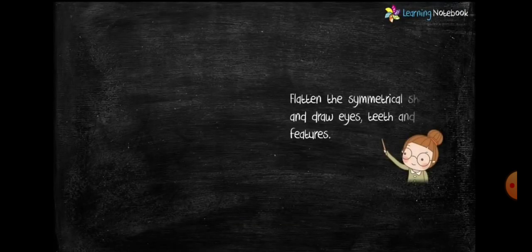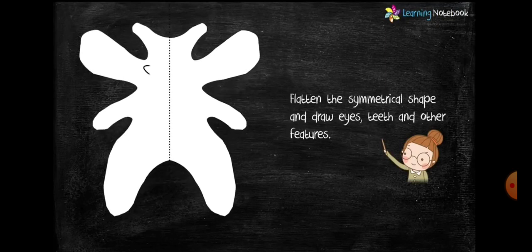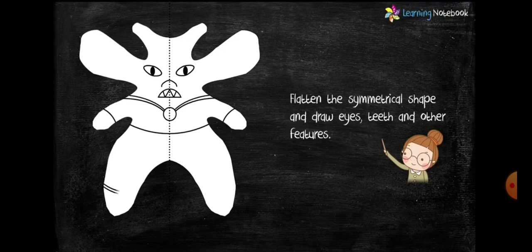Now in the next step, flatten this symmetrical shape and draw eyes, teeth, and other features of alien as shown here.